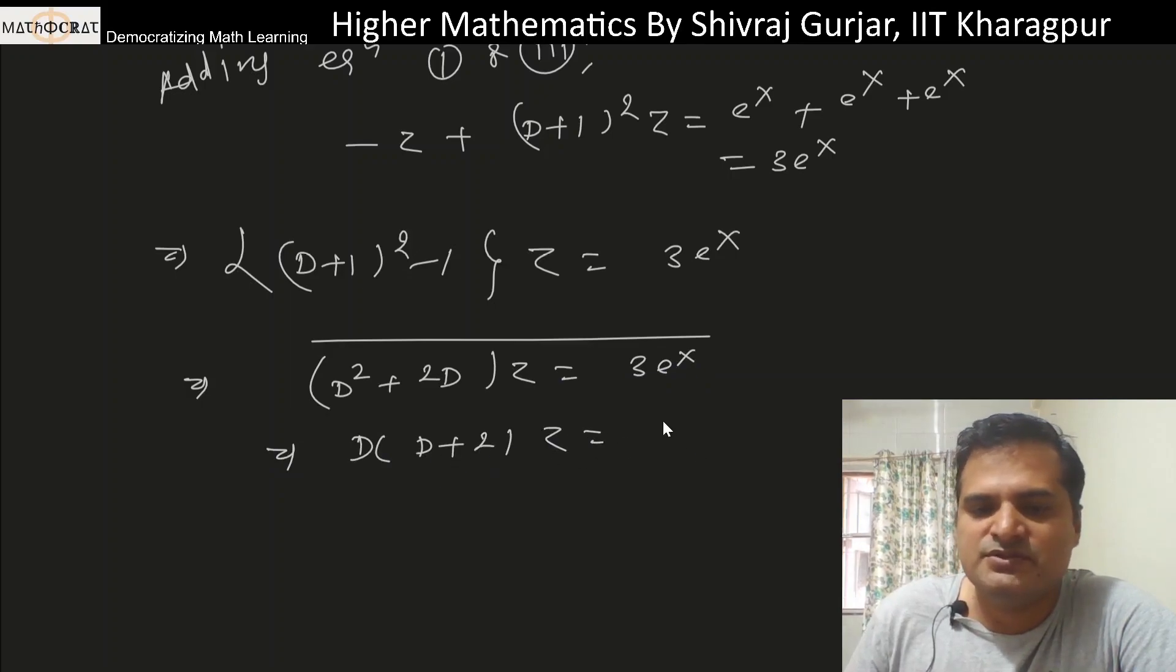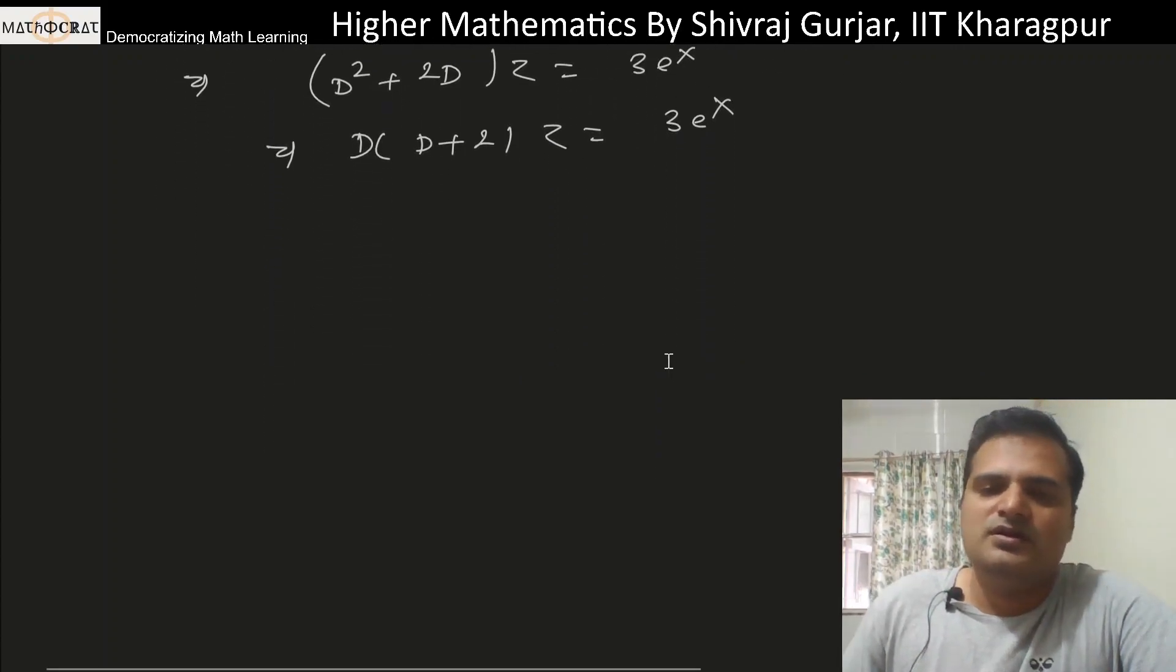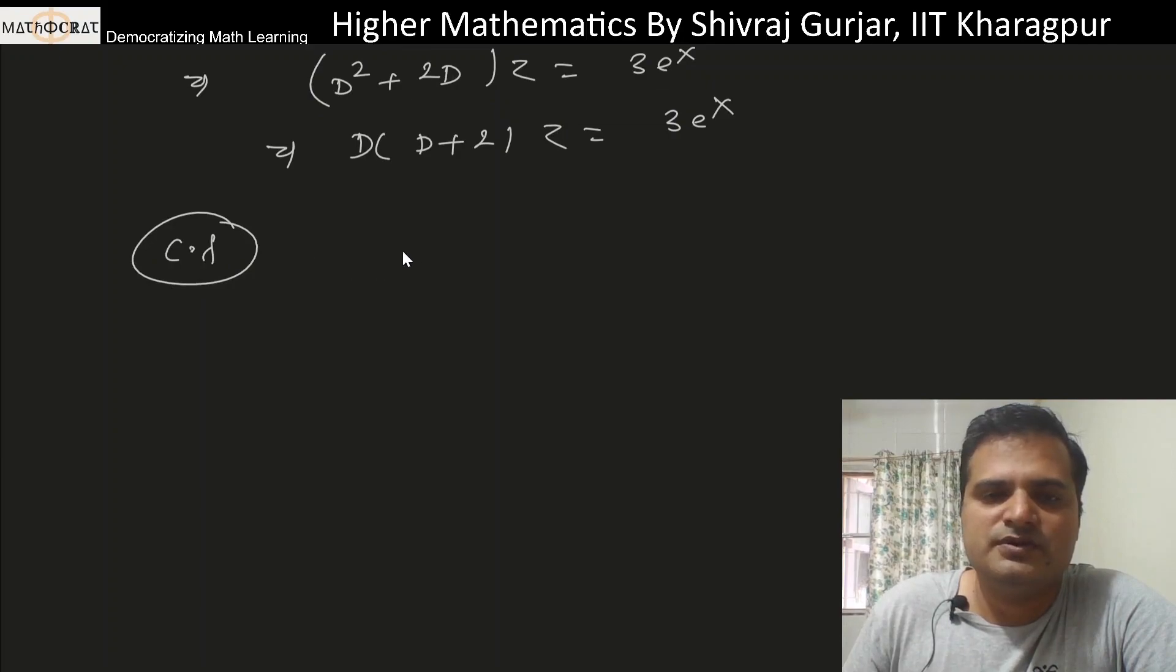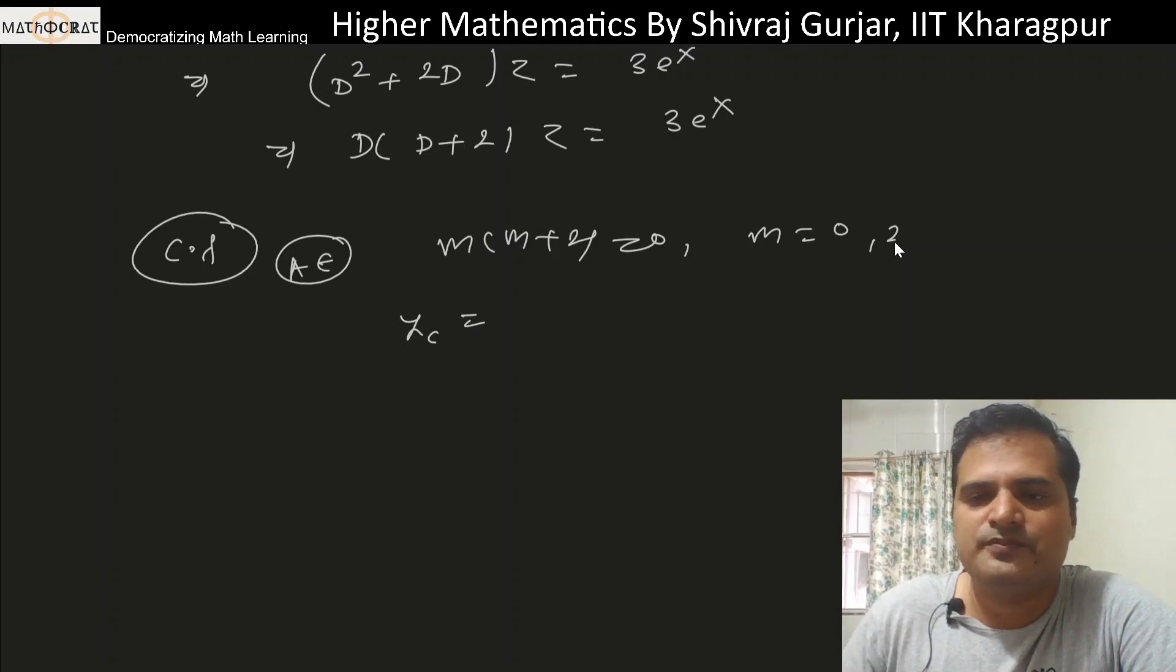We can solve for the complementary function. The auxiliary equation will be m(m+2) = 0. This gives m = 0 and m = -2. So the complementary solution will be C₁e^(0x) = C₁, plus C₂e^(-2x).